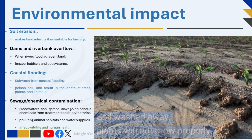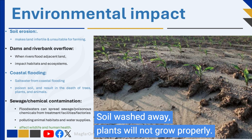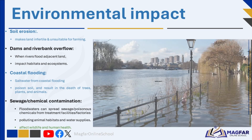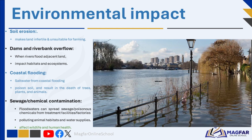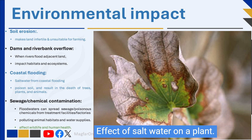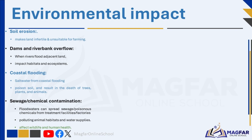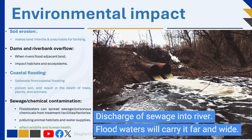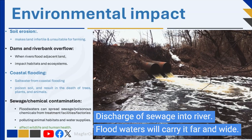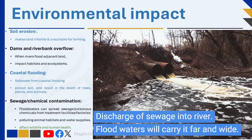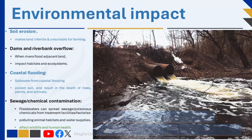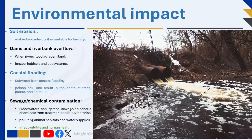Fast-flowing floodwaters can wash away soil, leading to the loss of fertile land and harming ecosystems. Soil erosion not only makes land infertile but also unsuitable for farming. When rivers exceed their banks, they flood adjacent land, affecting habitats and ecosystems. Overflowing dams can wash away surrounding land. Saltwater from coastal flooding can poison soil and result in the death of trees, plants, and animals. Sewage and chemical contamination can also occur — floodwaters can carry sewage from treatment facilities, polluting animal habitats and water supplies. Poisonous chemicals dumped in rivers can spread over a wider area during flooding, contaminating soil, water sources, and potentially affecting wildlife and human health.